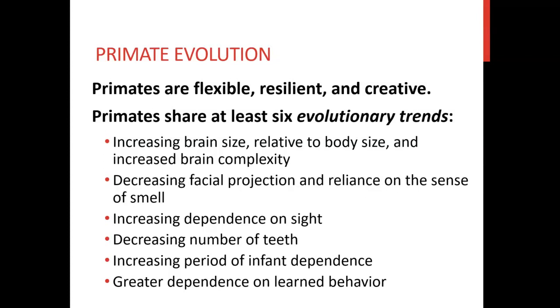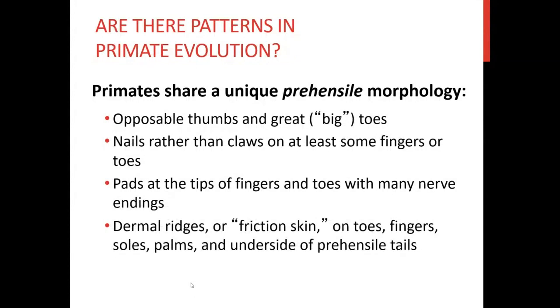Are there patterns in primate evolution? Primates share a unique prehensile morphology: opposable thumbs, great big toes, nails rather than claws, and at least some fingers or toes with pads. They also have dermal ridges — friction skin on toes, fingers, soles, palms, and the underside of prehensile tails. These are things we have in common as a whole in terms of evolution.